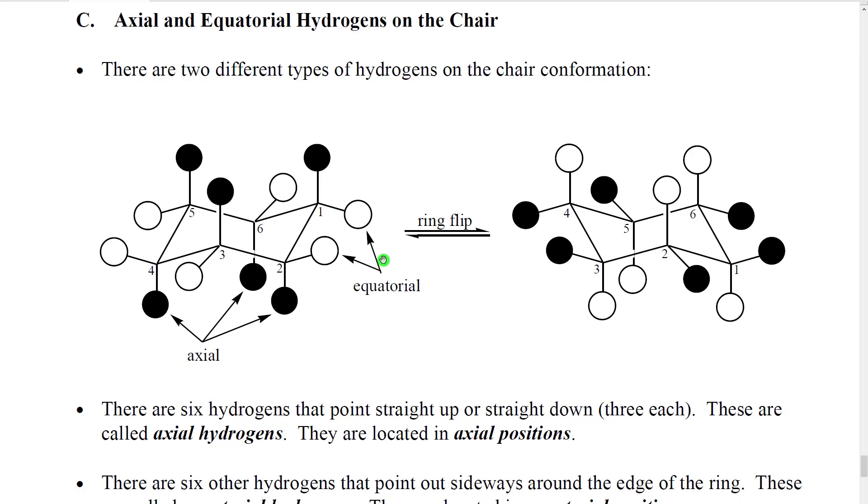Now, if these are all hydrogens, then this would be an axial hydrogen, this would be an equatorial hydrogen. And in fact, the vast majority of rings have lots of hydrogens, and they're equatorial and axial hydrogens.